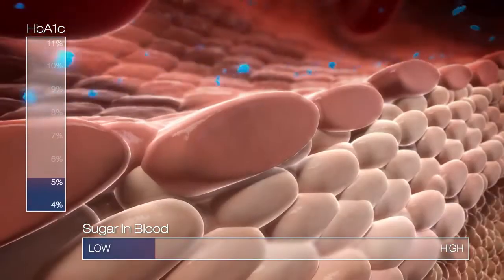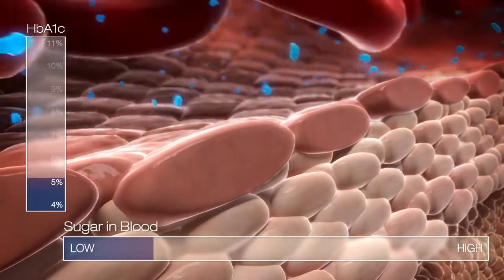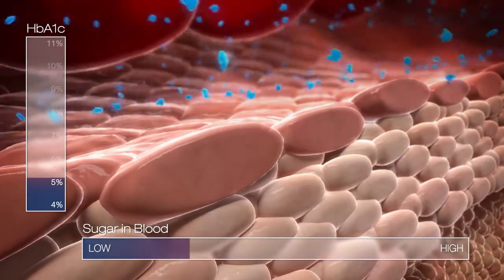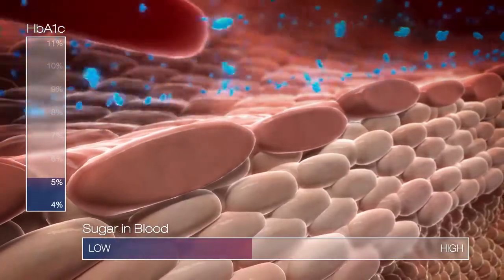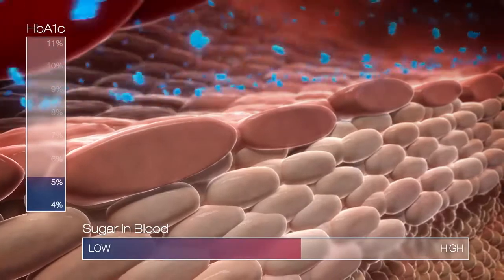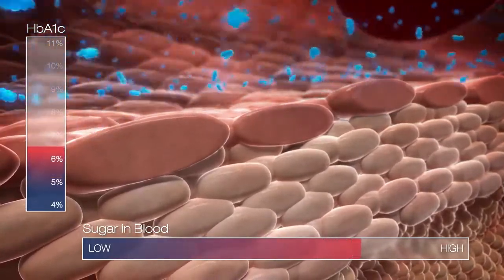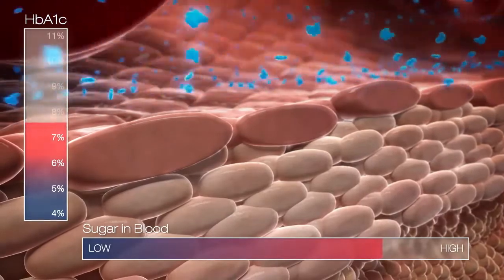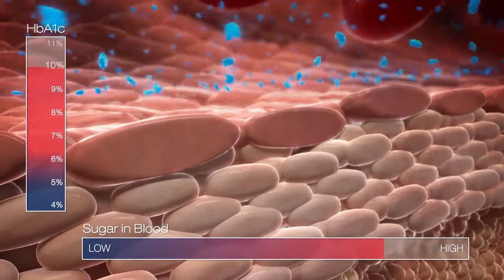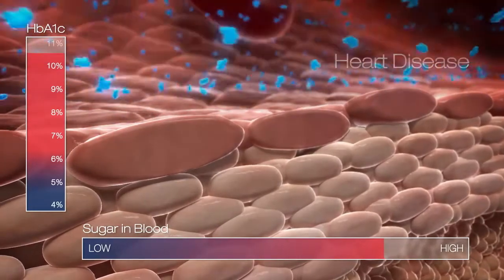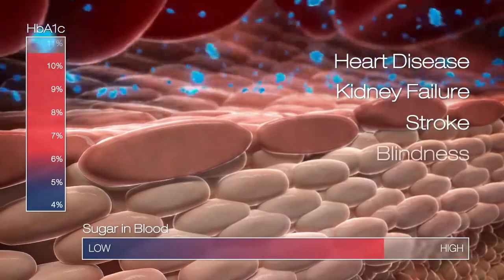In people with diabetes, the body has difficulty moving sugar out of the blood, so the sugar remains in the blood. This is why sugar levels are higher in people with diabetes. As the blood sugar level increases in someone with diabetes, more sugar attaches to the protein in the red blood cells, and thus the higher the HbA1c. This may increase your risk of developing diabetes-related complications such as heart disease, kidney failure, stroke, blindness, and amputation.